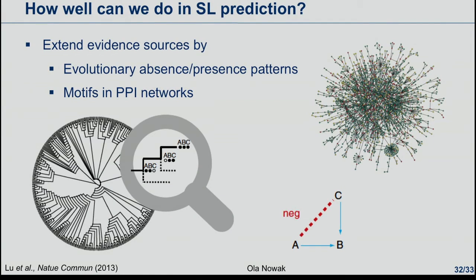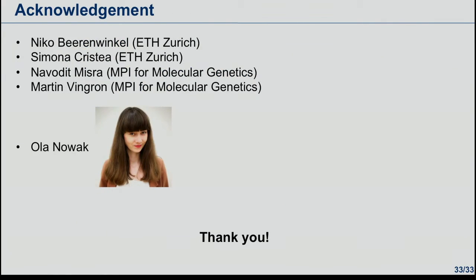What we are working on now is extending the evidence sources further. We are inspired by the Lue et al. paper and want to look at evolutionary absence/presence patterns, mine protein-protein interaction networks, and look for specific motifs in these networks that could predict negative genetic interactions. I'd like to thank Niko, Simona for the mutual exclusivity work, and Navadid, Martin, and Ola Novak for the synthetic lethality work.